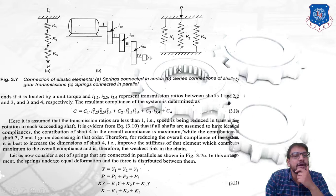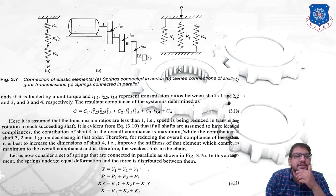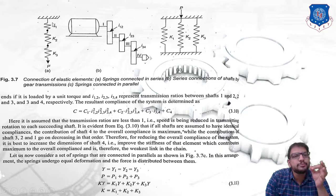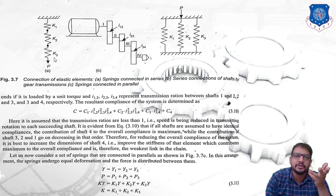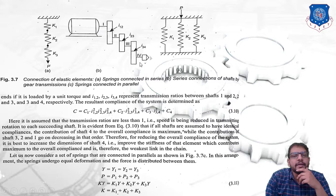For a series connection, refer to the diagram shown. You can see three springs, each with different stiffness: k1, k2, and k3, arranged in series. The load acting on all three springs is the same — capital P. Each spring will have a different deflection: delta1, delta2, and delta3. This spring arrangement is a representation of a gearbox where an electric motor transmits power through stages to the machine tool spindle.